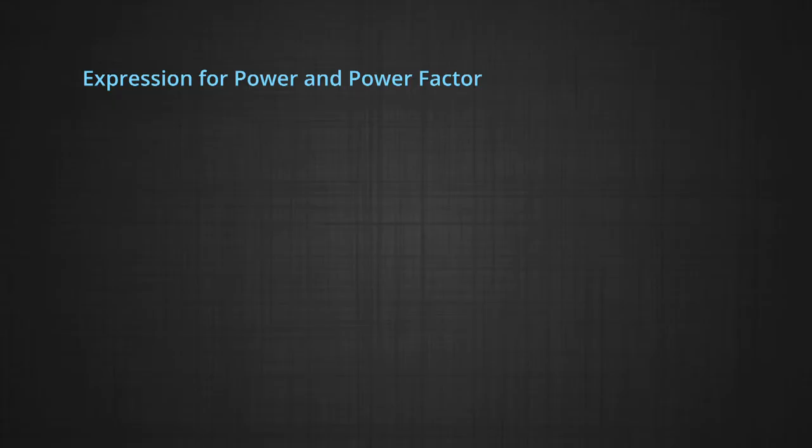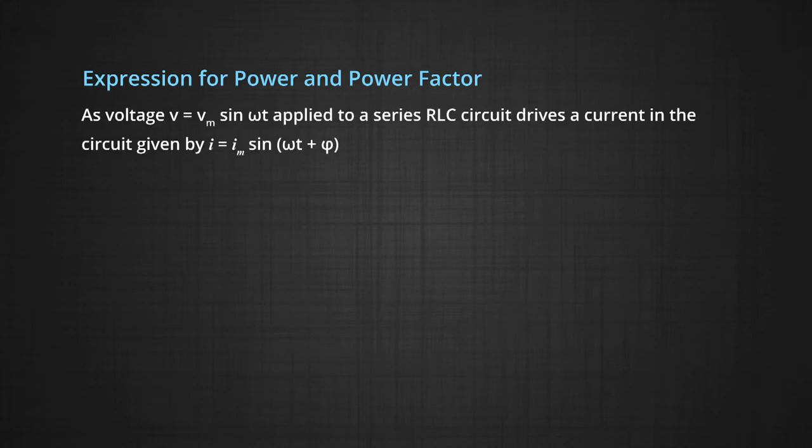We can talk about the expression for power and power factor. As voltage V equals V naught sin omega t applied to a series LCR circuit drives a current in the circuit which is given by equation I equals I m sin omega t plus phi, where I m equals V m divided by Z and the phase difference phi equals tan inverse X C minus X L divided by R.